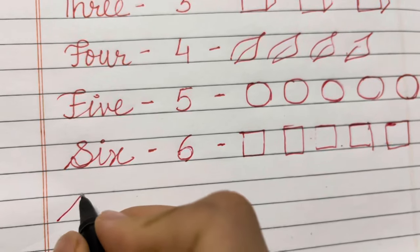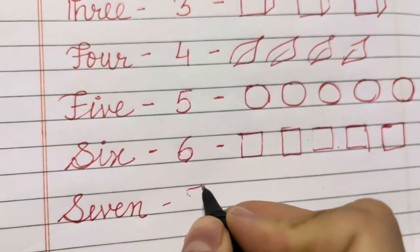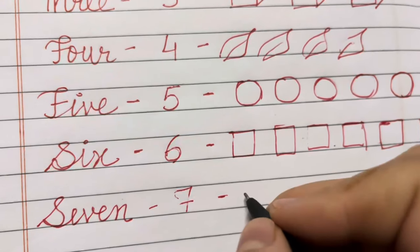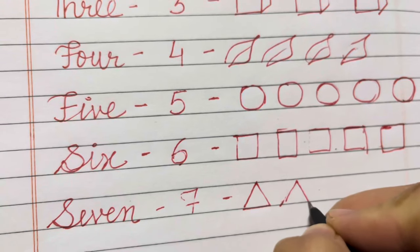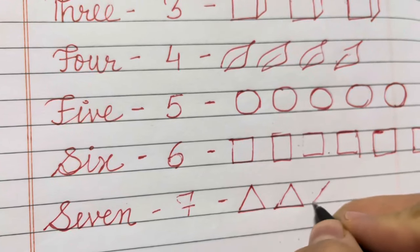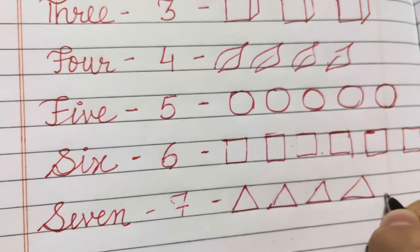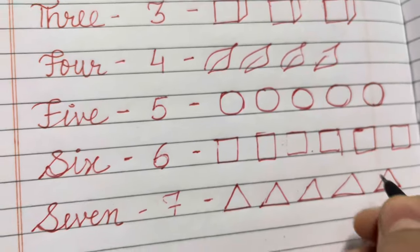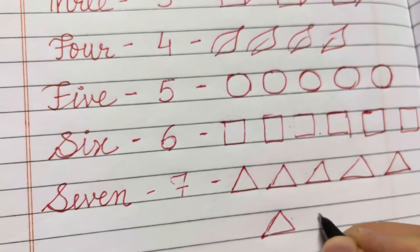Seven. S, E, V, E, N. Seven. Seven triangles. One, two, three, four, five, six, seven.